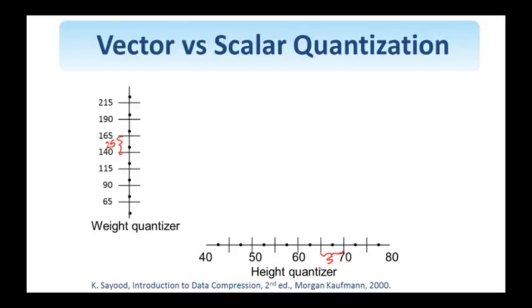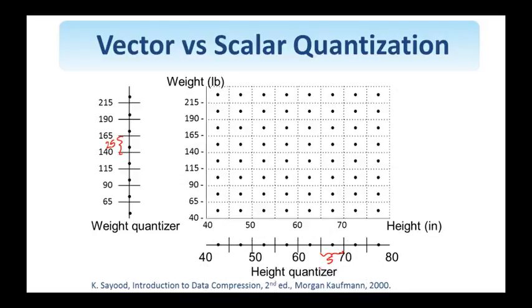But now, let's look at this representation in two dimensions. Nothing has changed. The heights are still quantized to the same 8 values, and so are the weights. However, we have tessellated the space uniformly. We have quantized values for a person who is 80 inches up here and weighs 40 pounds. So, this is a 6 feet, 8 inch person that weighs 40 pounds. And similarly, a person who is 40 inches tall and weighs more than 250 pounds, the person up here. Obviously, these outputs will never be used, as is the case for many other outputs.